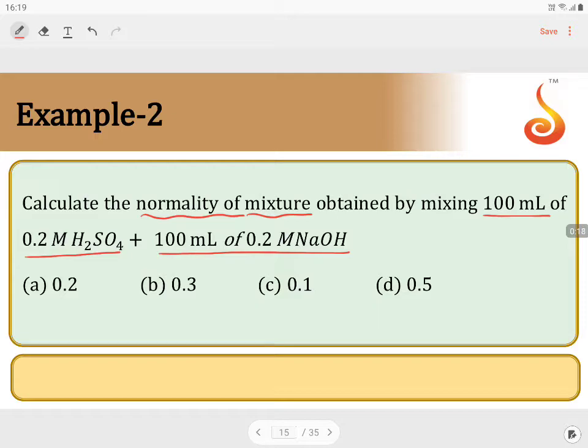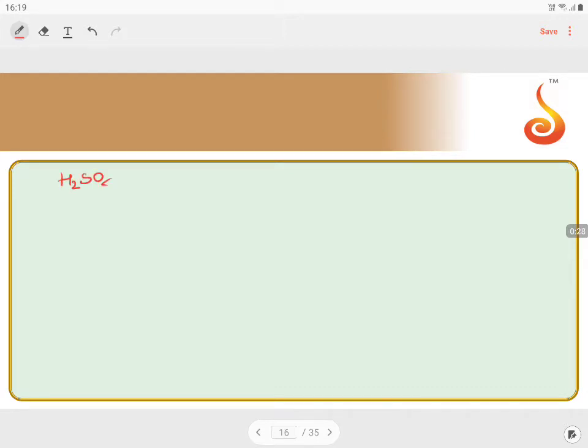So first we have to see what is the data about the acid and what is the data about the base individually. Let us write. First we will see with respect to acid H2SO4. With respect to the acid H2SO4, we know valency factor is equals to 2. Now what is the data which is given along with this valency factor? It is also given molarity. Molarity is equals to 0.2 molar. So the normality of the acid is equals to molarity into valency factor, that is 2 into 0.2. This becomes 0.4 normal. Volume of acid is given as 100 ml. So this is what we have taken.